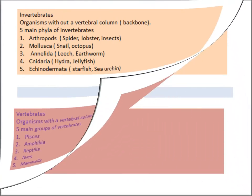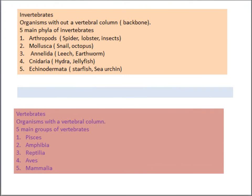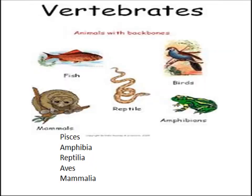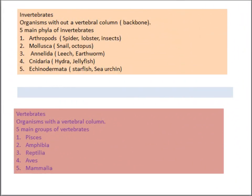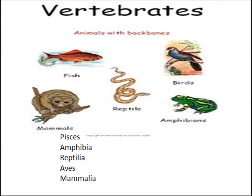By considering the structural features of vertebrates, we can classify them into five groups: Pisces, amphibians, reptilia, aves, and mammalia. Pisces are fish well adapted to live in water. Amphibians have the ability to live in both land and water. Reptiles are cold-blooded animals with dry skin without glands. Aves are birds adapted for flying. Animals that nourish their young with milk belong to class mammalia.